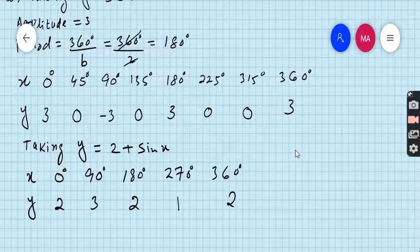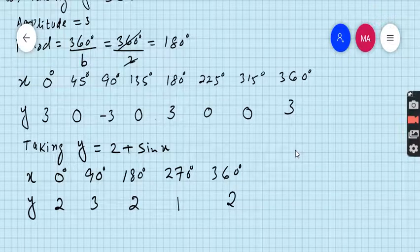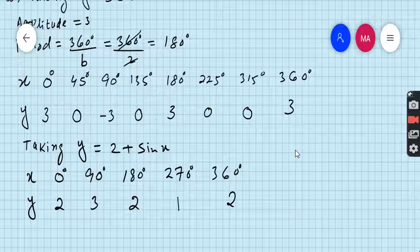When x is 90, the answer is 2 plus sin90, sin90 is 1, 2 plus 1 is 3. When x is 180 degrees, sin180 is 0, 0 plus 2 is 2. When x is 270, sin270 is minus 1, so 2 minus 1 is 1. When x is 360 degrees, then 2 plus sin360, sin360 is 0, so 2 plus 0 is 2.